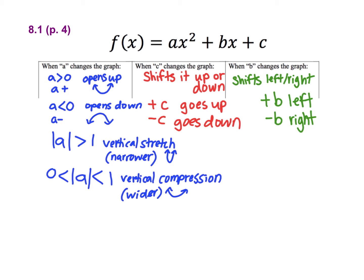A affects its shape. When a is a positive number, that's any number that's greater than zero, that's going to have a graph that opens up like a u. If a is a negative number, any number below zero, then it's going to open down like an upside down u.